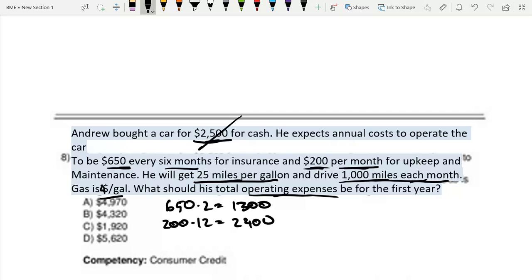And maintenance, he will get 25 miles per gallon and drive 1,000 miles each month. So how many gallons of fuel is he using? Because we want to find out how many gallons of fuel he's using to calculate the cost. So the gallons of fuel will equal 1,000 over 25, right? Because he gets 25 miles over 25 miles, he goes a gallon. And this is the number of gallons he's using per month.